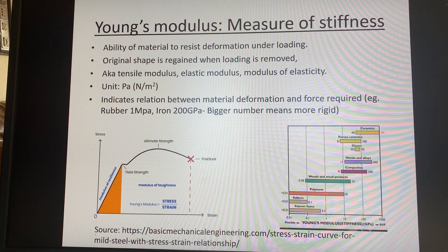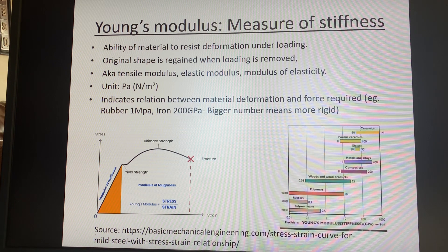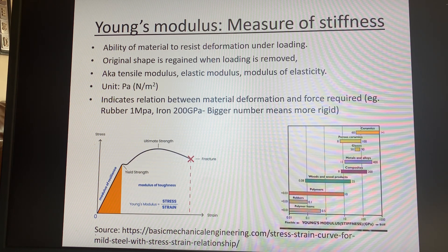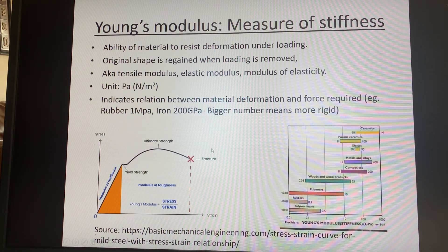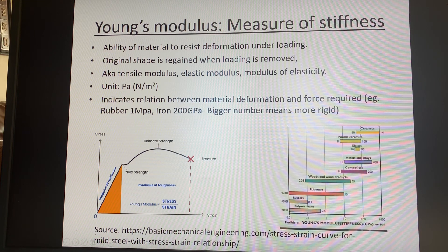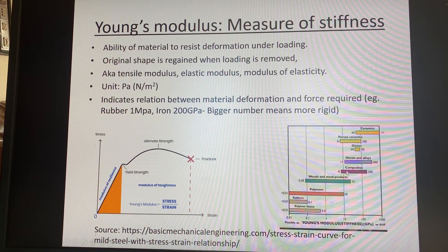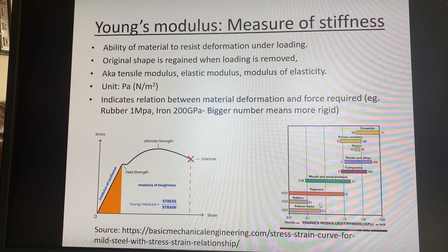Young's modulus is a measure of stiffness. If you subject a material to a load or to a force, the Young's modulus determines how rigid the material is — how much force or pressure the material can take without deforming — meaning that if you remove the force, the material should regain its original shape. For example, iron has a Young's modulus of about 200 gigapascals compared to rubber which has a Young's modulus of 1 megapascal. The bigger your Young's modulus, the more rigid you are and the more able you are to resist deformation when subjected to a load. This figure here shows distinctions between different materials: ceramics have quite high stiffness, metals and alloys are also quite high, compared to wood, polymers, and rubbers.